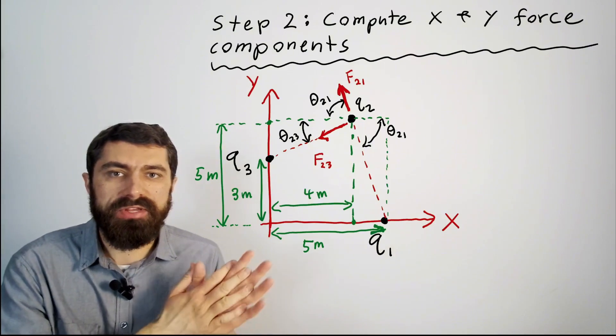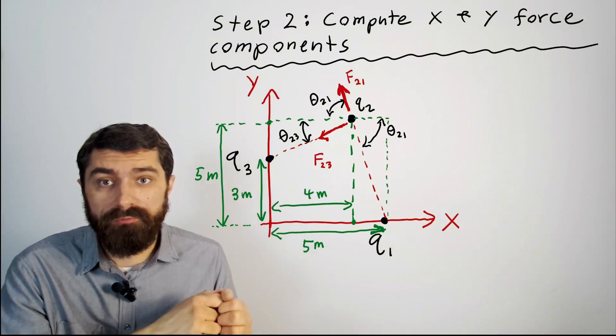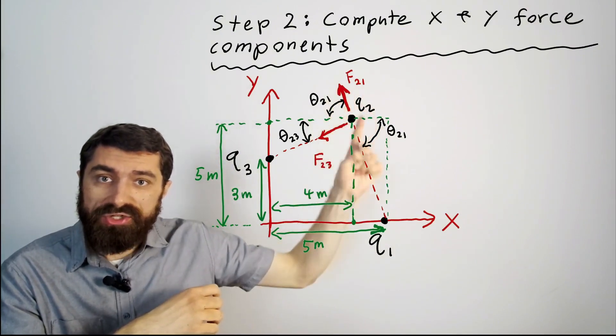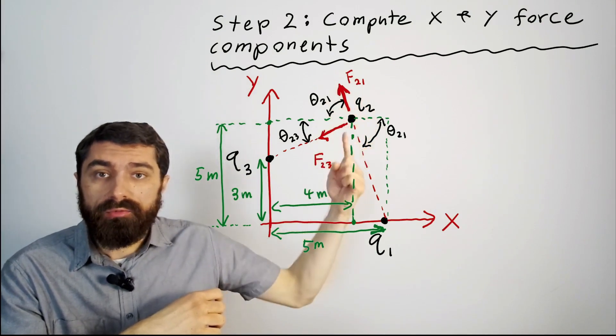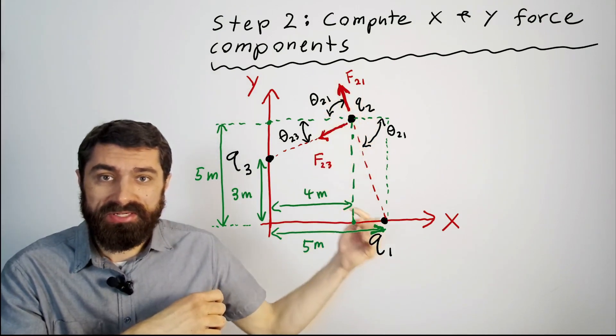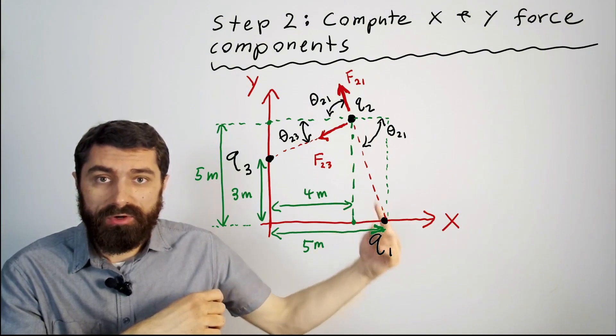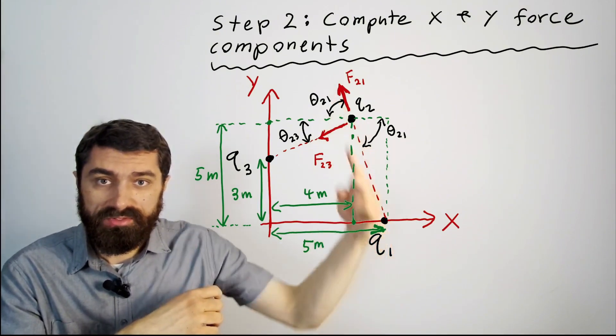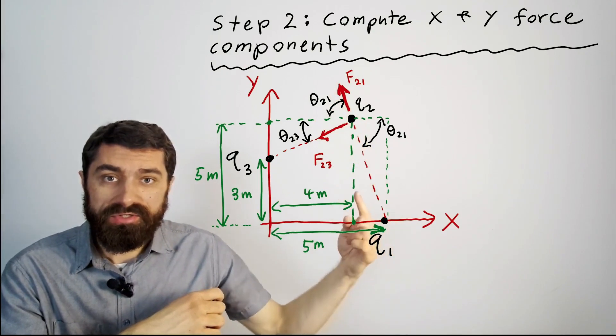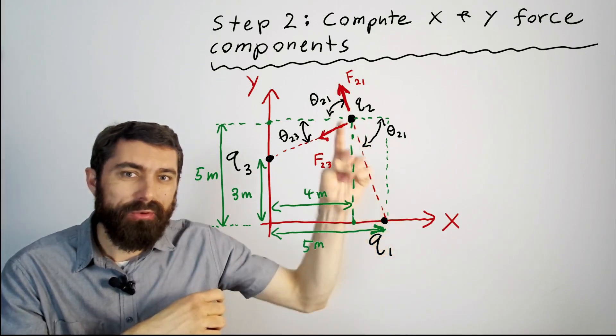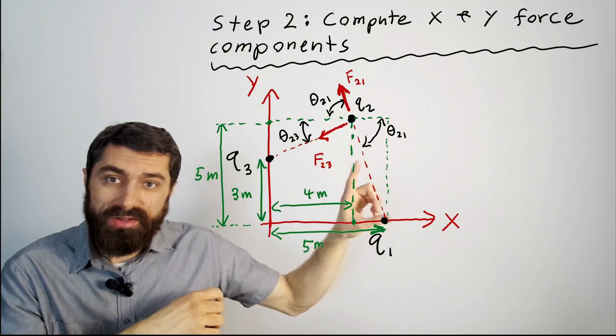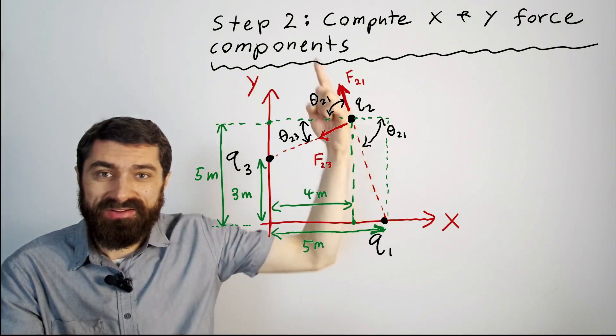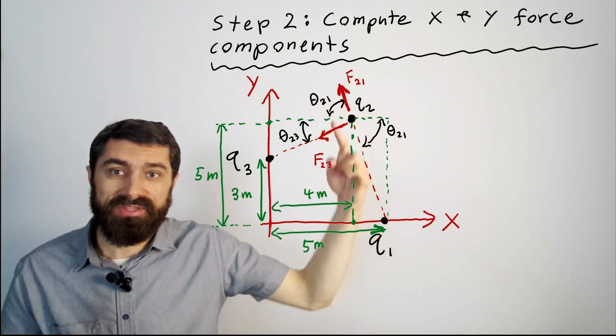Let's first consider the direction of each individual force. We calculated here f21 and I went ahead and sketched out the direction of f21. The reason I know it's in this direction is because by Coulomb's law the force between q1 and q2 has to be on the line joining the two charges. But also I know that these two charges are both positive, and because they're both positive that means that they repel one another. And so the force on q2 is going to be upward in this direction in line with this line.